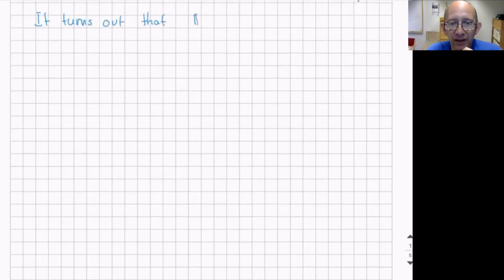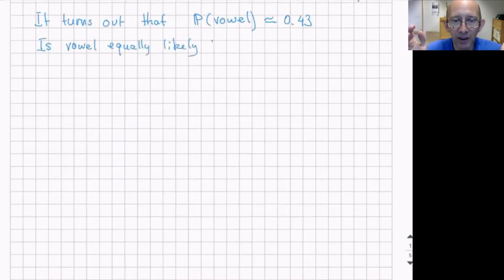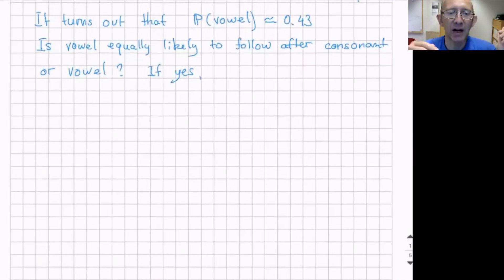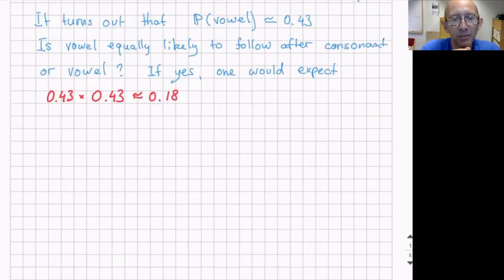The fraction of vowels is roughly 43% of all 200,000 letters in the text. But now you can ask: is a vowel equally likely to follow after a vowel or after a consonant? Does it matter what is the preceding letter? If the vowel is equally likely to be preceded by a consonant or a vowel, one would expect the probability of two vowels in a row to be 0.43 times 0.43 — roughly 18% of all pairs of letters should be pairs of vowels.